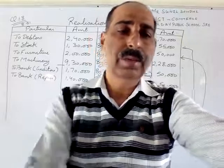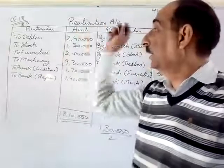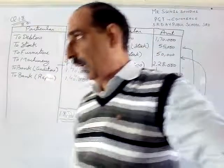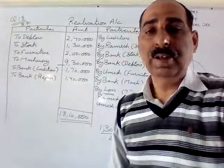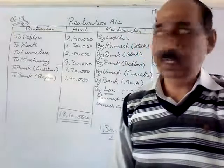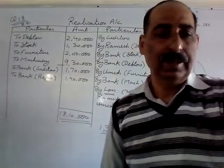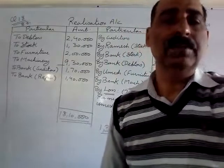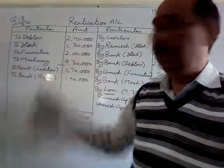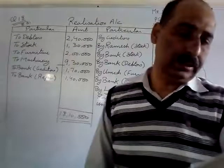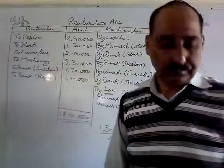Balance sheet mein liabilities aur assets given hain. Jab bhi aap balance sheet se realization account prepare karenge, realization account mein jo bhi assets given hain question ke andar, wo saare assets realization account ke andar transfer karne hain. Bank ko hum yahan transfer nahi karte, kyunki bank automatically cash mein available hai. Doosra, debtors given hain 2,40,000 rupees aur stock 1,30,000 rupees.